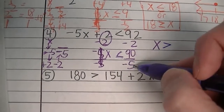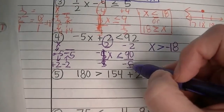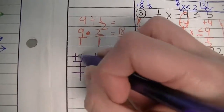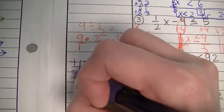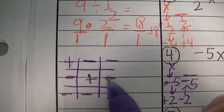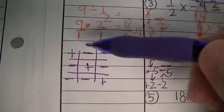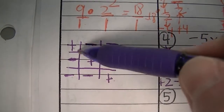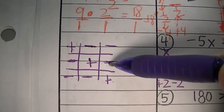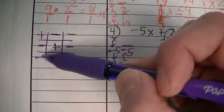90 divided by negative 5 is negative 18. A positive divided by a negative gives you a negative answer — and here's how to remember that. This only works for multiplication and division. A positive times a negative is negative, a negative times a positive is negative, a negative times a negative is positive. Same pattern for division: positive divided by negative is negative, negative divided by positive is negative, negative divided by negative is positive. So positive 90 divided by negative 5 gives negative 18. Since we already reversed the sign, x is greater than negative 18.